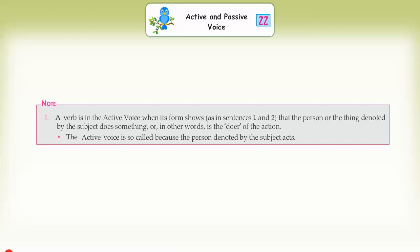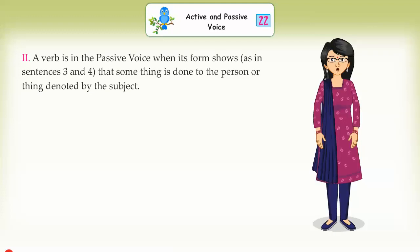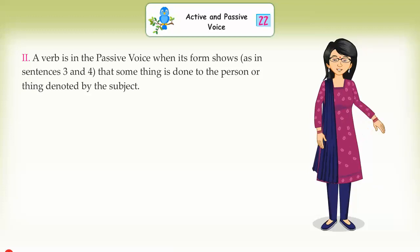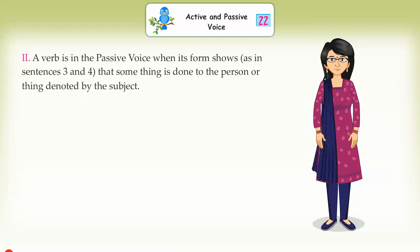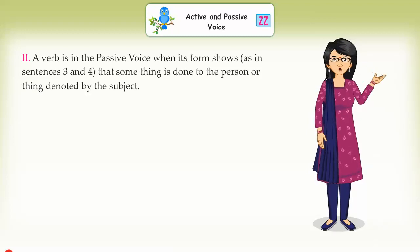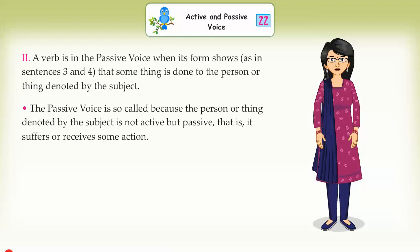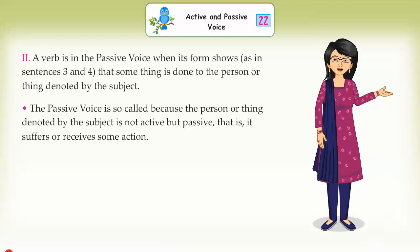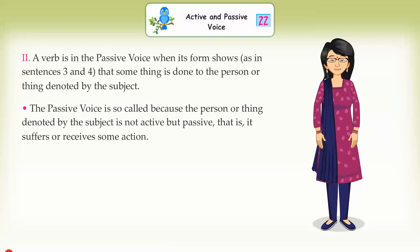The active voice is so called because the person denoted by the subject acts. A verb is in the passive voice when its form shows, as in sentences 3 and 4, that something is done to the person or thing denoted by the subject. The passive voice is so called because the person or thing denoted by the subject is not active but passive — that is, it suffers or receives some action.